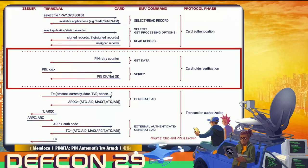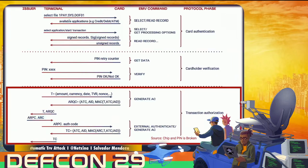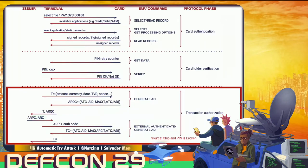The cardholder verification step will depend on the terminal technology and the card technology. All this process finishes with transaction authorization, where the terminal sends all the data to the backend financial institution. The financial institution sends back the ARPC, which is the authorization response code. This is applied to the card and to the transaction, determining whether the transaction goes through.